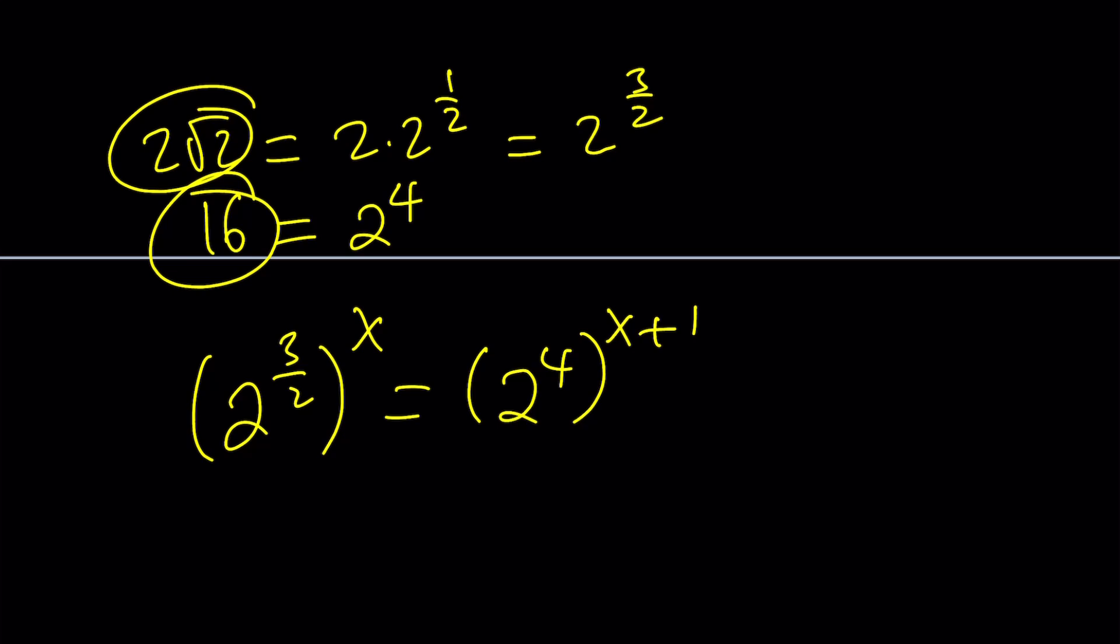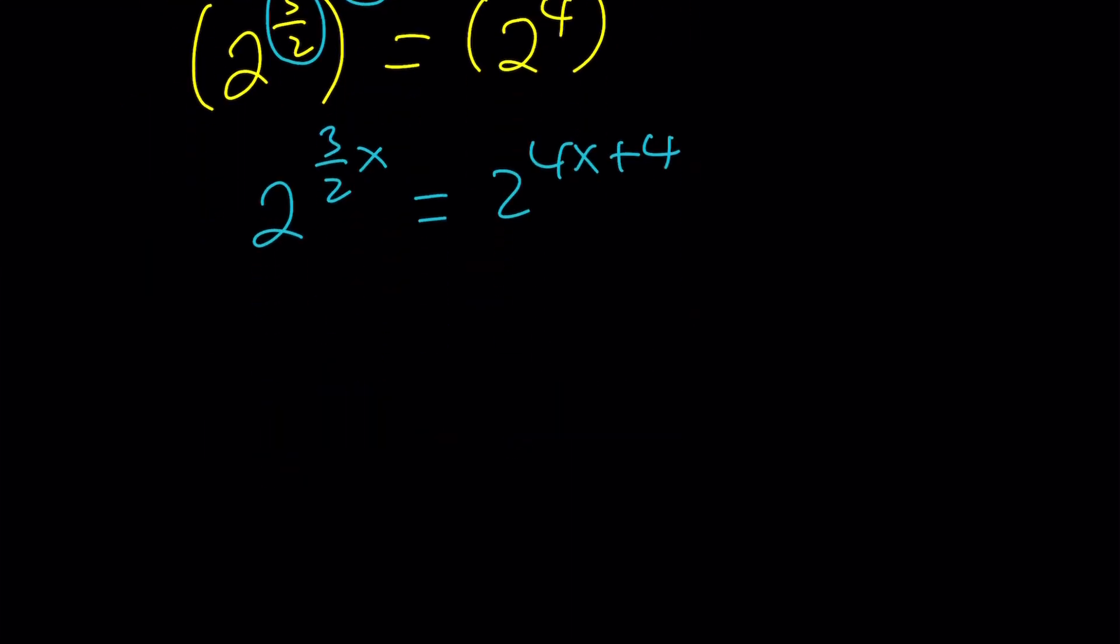Now you can go ahead and use the properties, multiply these exponents, 2 to the power of 3 halves of x. And then this is 2 to the power of 4x plus 4 by using the distributive property. And the rest is fairly straightforward, isn't it?